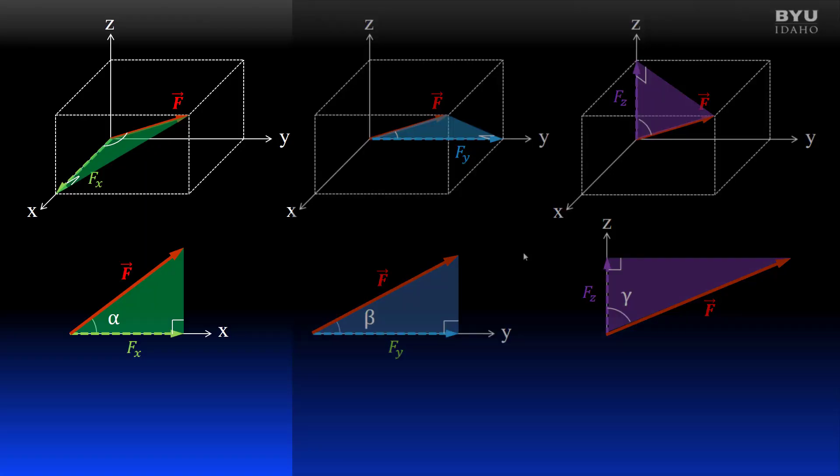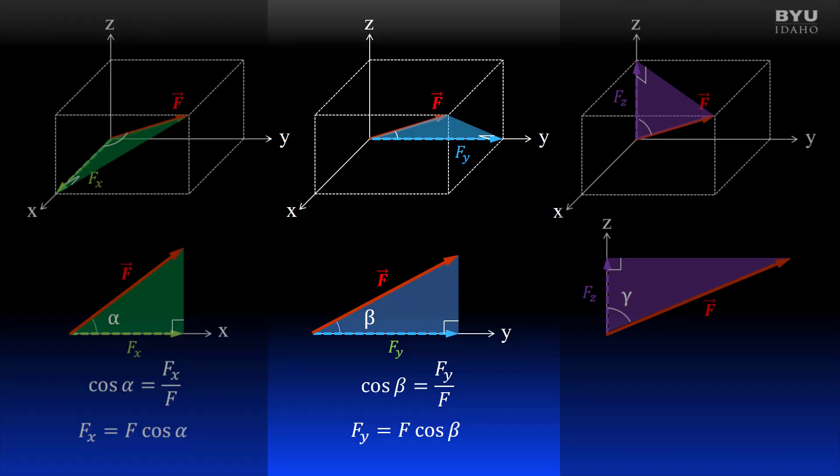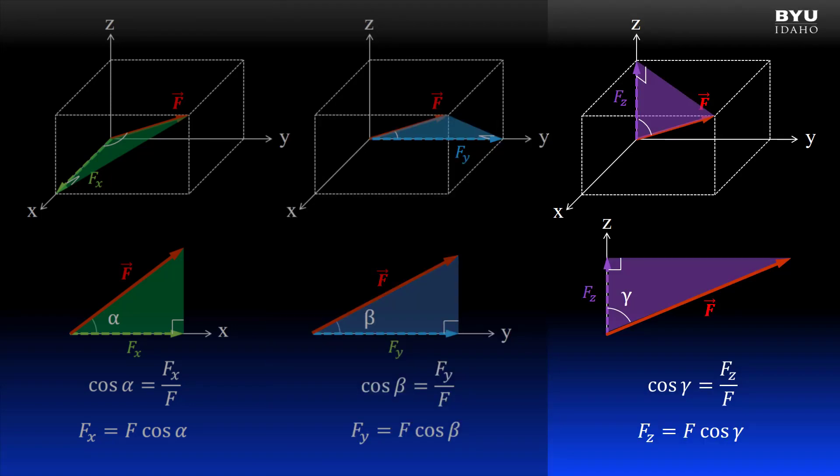Let's consider the relationship between the vector, the direction angle, and the vector axis component. We know that the cosine of an angle is the adjacent side divided by the hypotenuse, which means the cosine of alpha is the x component of the vector divided by the vector magnitude. We can rearrange this expression to solve for the x-direction component. It is the vector magnitude times the cosine of alpha. Similar relationships can be shown for angle beta and the y-direction component, and angle gamma and the z-direction component.